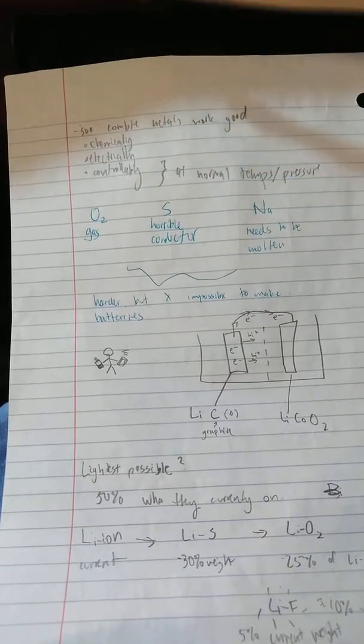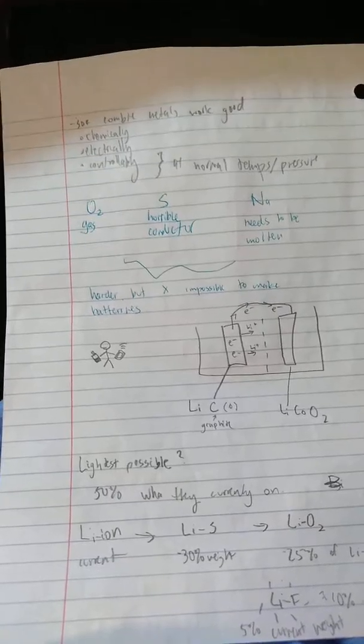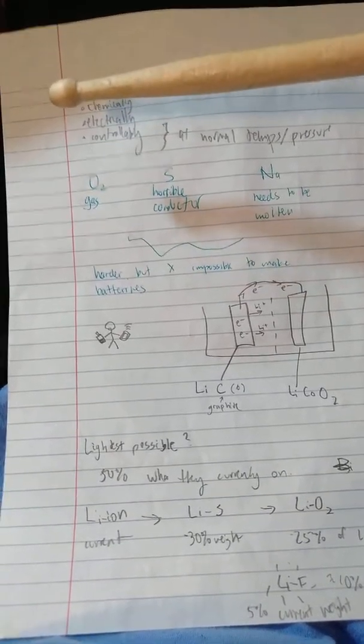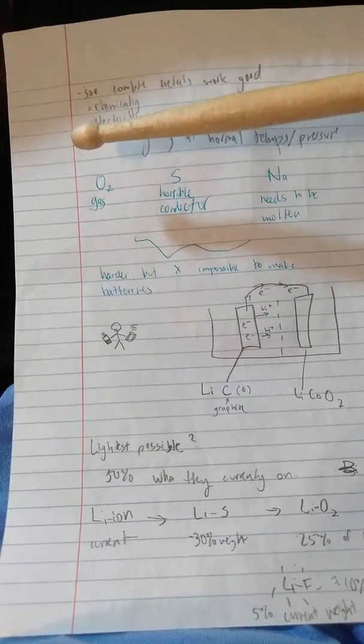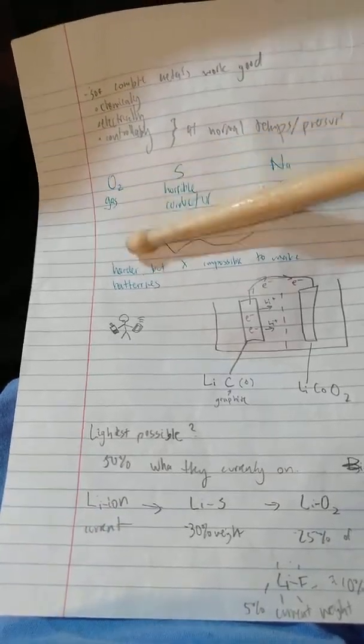When we combine metals, we want to see what metals work good chemically, electrically, and controllably. Obviously we need to control it too. A lot of the other ones other than fluorine is oxygen.